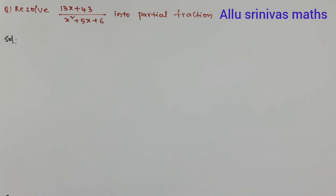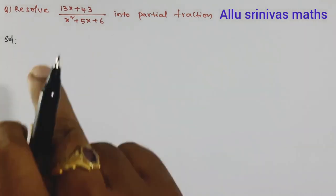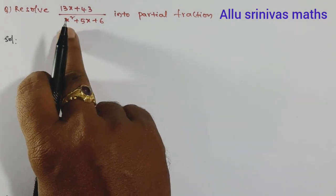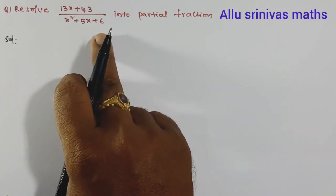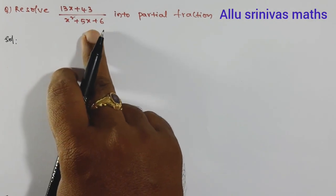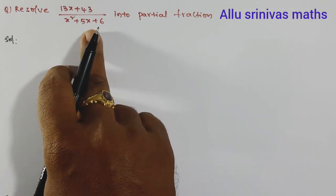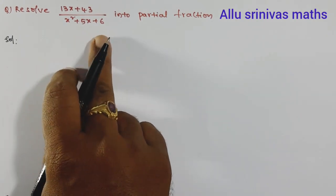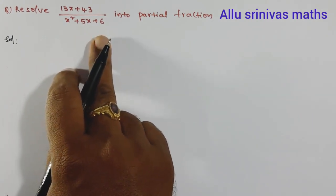Hi everyone, welcome to Allou's Inverse Math Class. Now we discuss factorization — the denominator has a factorization case here. The denominator has a quadratic expression, a quadratic polynomial, so we have to verify whether it is irreducible or reducible.